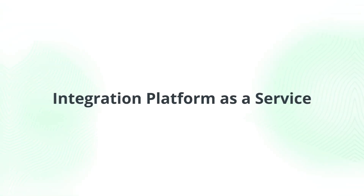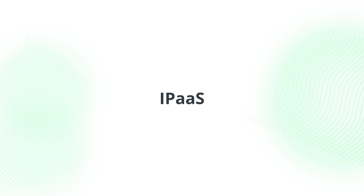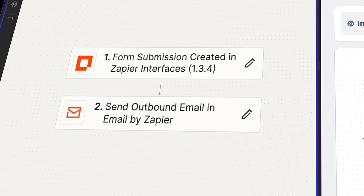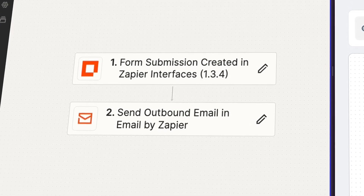Zapier and Workato are technically what's called an integration platform as a service, or iPaaS for short. Essentially, what these tools help you do is automate your work by connecting your business tools together. As an example, imagine a lead submits a form on your website — when that happens, you might want to automatically send them an email in Gmail. This is exactly the type of thing that Zapier and Workato help with and make super easy.